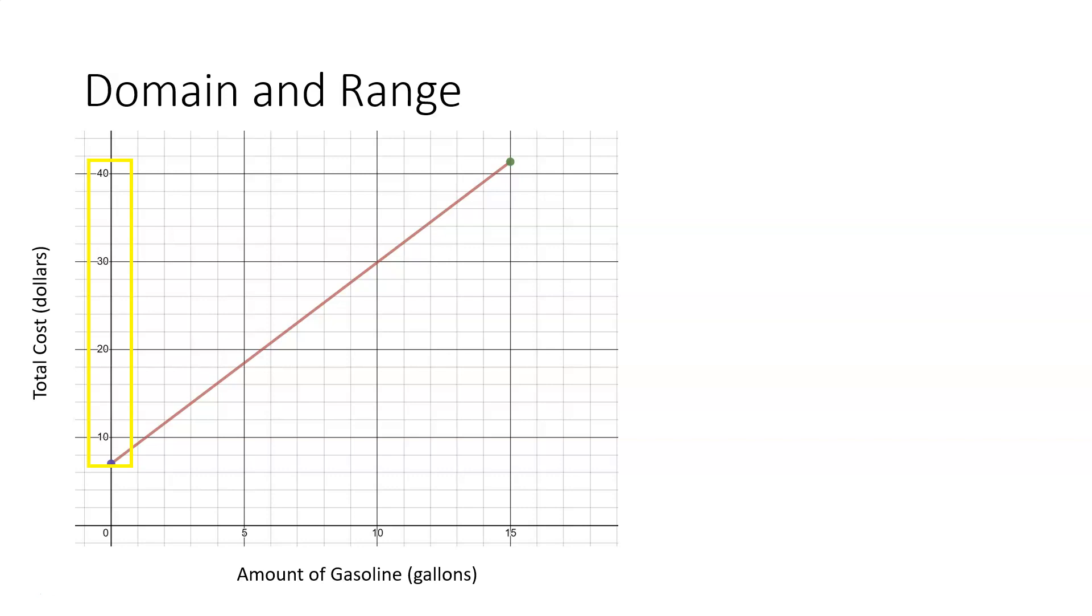It's not quite as clear what the upper value of our range is, and we could figure that out algebraically by doing some computation. So we know that the maximum amount of gas that we can put in the car is 15 gallons, and so if we plug in 15 into our function and we calculate the cost, we see that it's going to be $41.35.